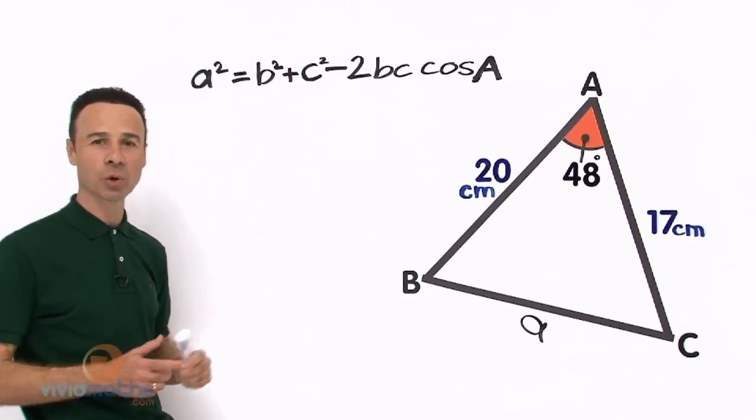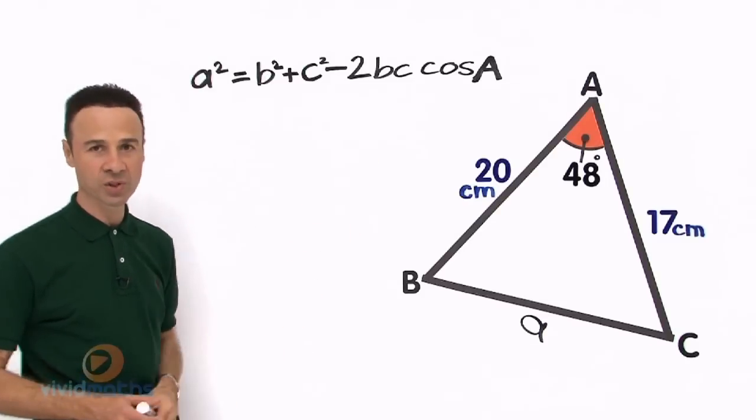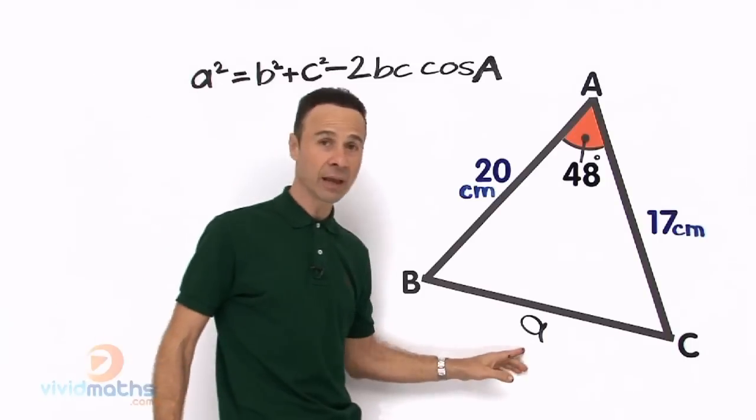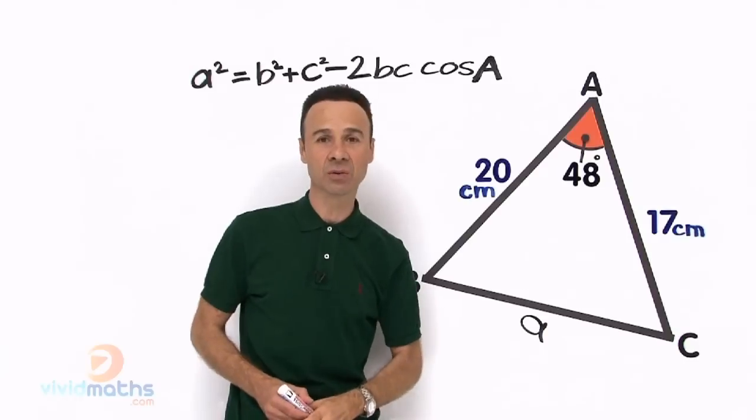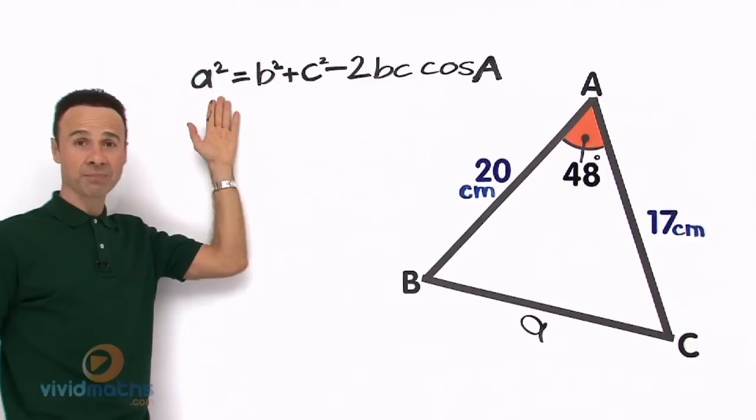So let us start to look at and take a closer look at what each letter refers to here, what each pronumeral refers to. Well, as I mentioned earlier, little a refers to the length directly in front of the 48 degrees capital A. Now that is what we are looking here. A, that is what we are finding.